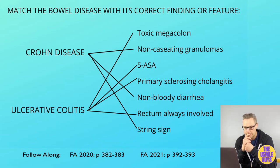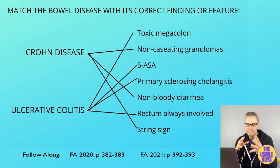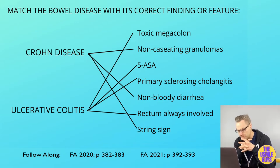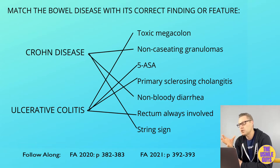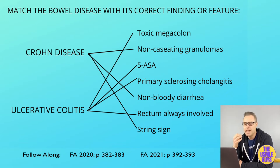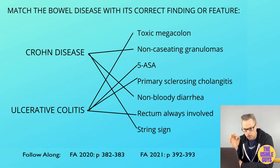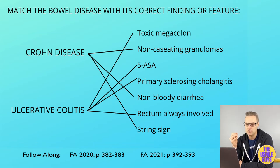From a macro perspective, Crohn's disease is characterized by transmural inflammation with a classic cobblestone appearance, linear ulcers, fissures, and bowel wall thickening. Ulcerative colitis is typically limited to the mucosa and submucosa and is classically described as friable with superficial or deep ulcerations. The loss of haustra seen in ulcerative colitis gives a lead pipe appearance on imaging.